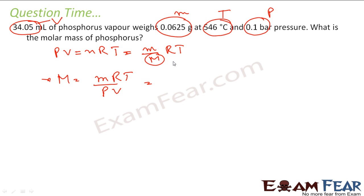Let us put all the values. What is the value of m? 0.0625 gram. R, R will be 0.083. T, 546 degrees Celsius plus 273 becomes 819 Kelvin. P, pressure here is 0.1 bar. And V, V is in milliliters, so making a liter, which becomes 34.05 into 10 to the power minus 3.